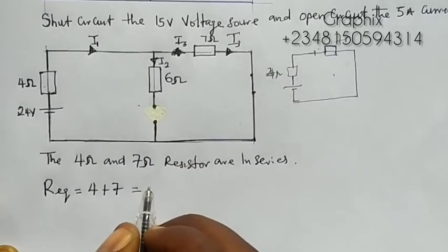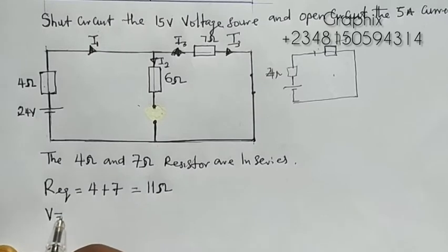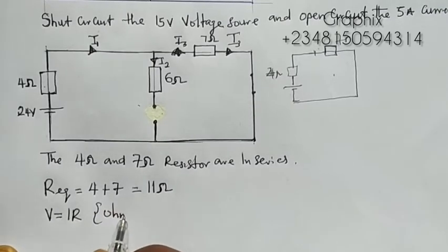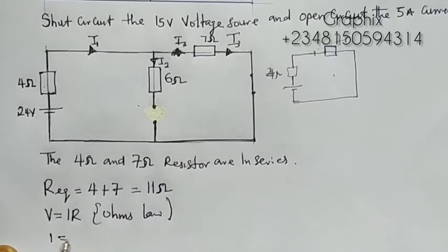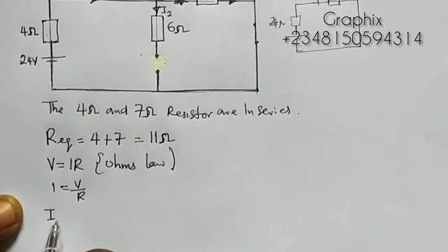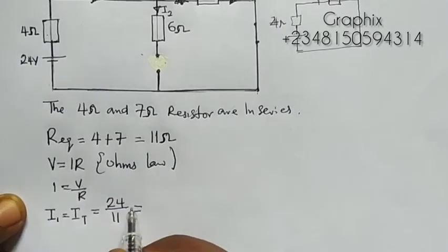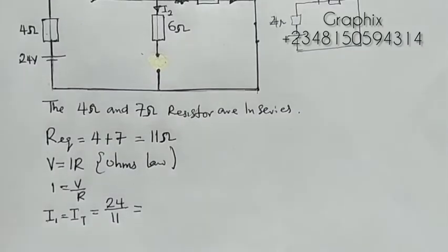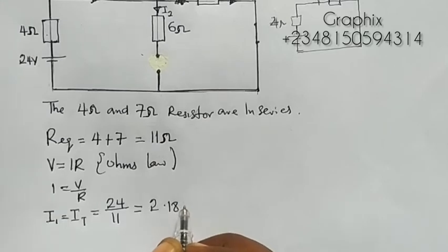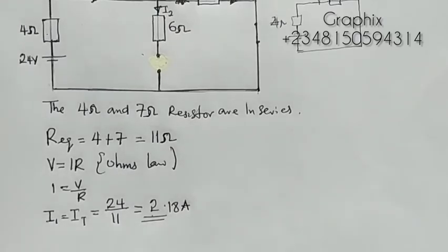So R-equivalent equals 4 plus 7, giving us 11 ohms. According to Ohm's law, V = IR, so I = V/R. My i-total equals 24 volts over 11 ohms, which gives me 24 divided by 11 — that is 2.18 amperes. That will be my current for this case.